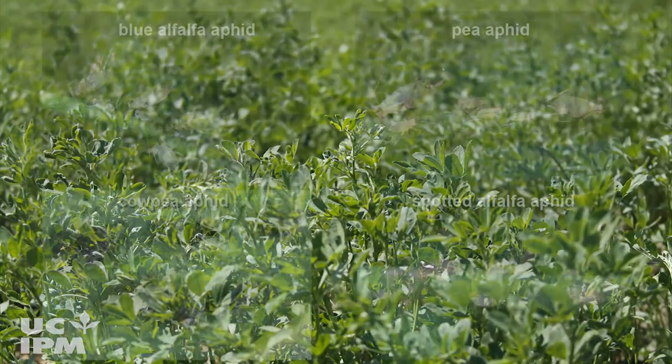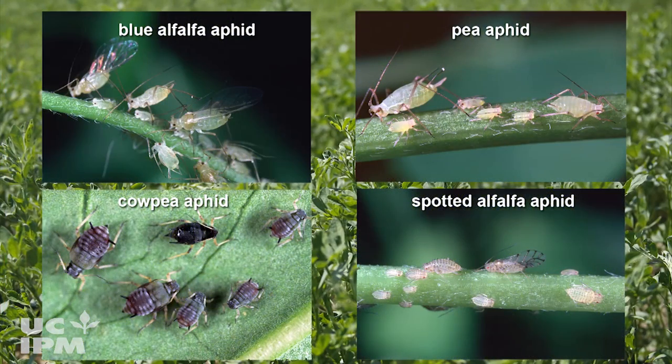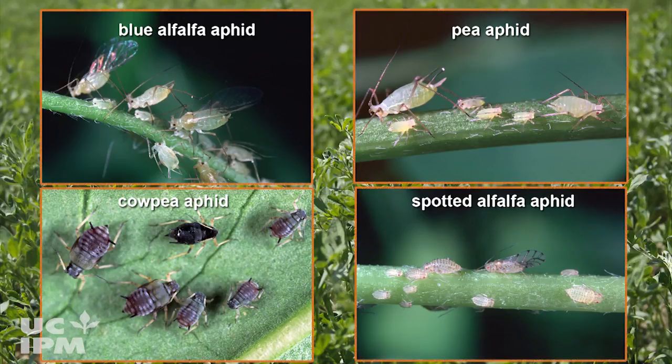There are four aphid types that infest alfalfa: blue alfalfa, pea, cow pea, and spotted alfalfa aphids.